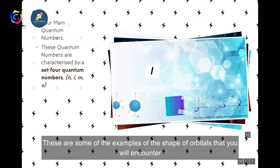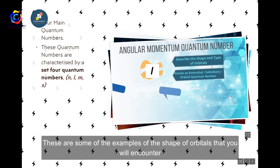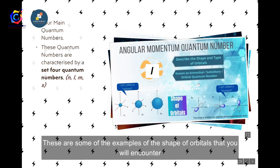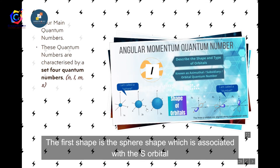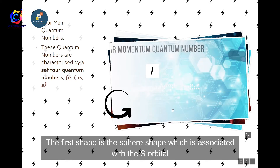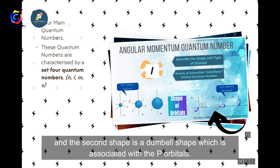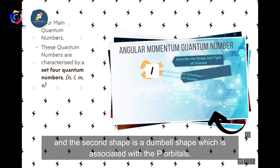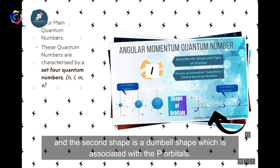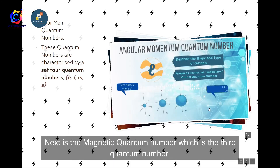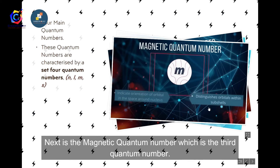Here are some examples of orbital shapes. The first is a sphere shape, associated with the s orbital. The second is a dumbbell shape, associated with the p orbitals. Next is the magnetic quantum number, which is the third quantum number.